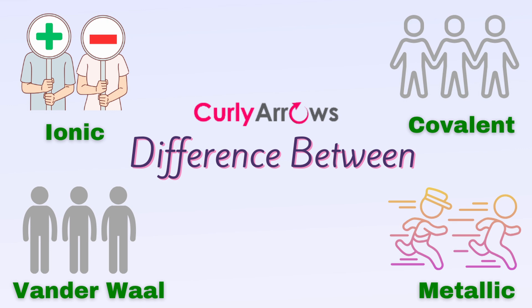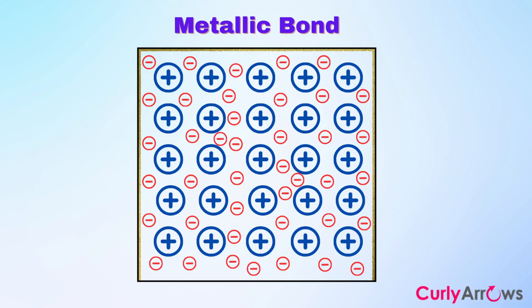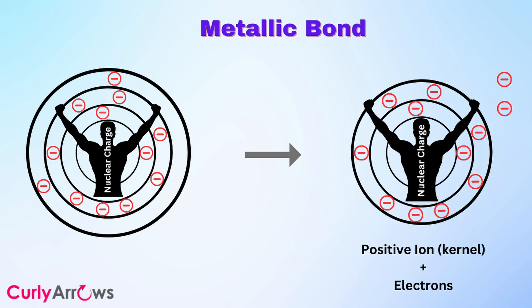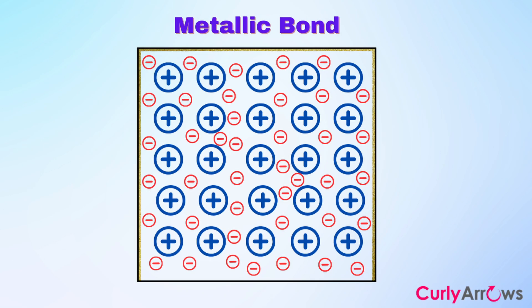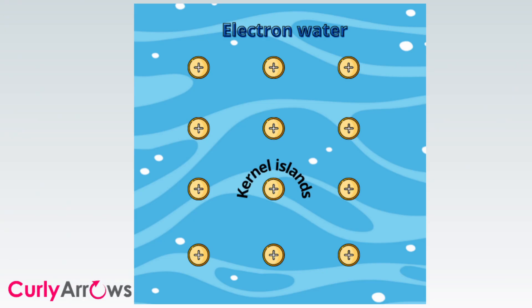The metallic bond is an attractive bond between metal atoms responsible for a metal's appearance, shape, malleability, and ductility. Metal atoms have a large size, and when the nucleus of such a large atom cannot effectively hold its outermost valence electrons, the electrons detach and delocalize. The attraction between many such positive ions and a delocalized sea of electrons forms metallic bonds, making metals excellent conductors of electricity.